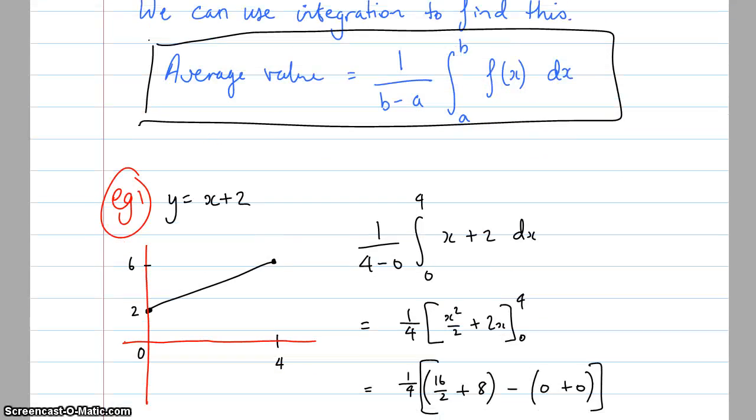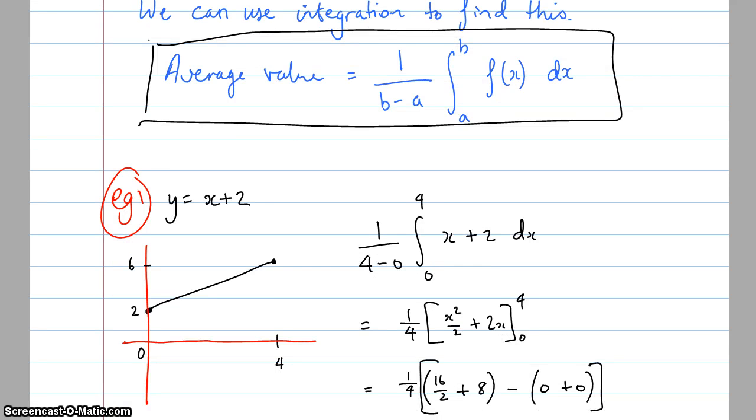So here's an example. I've got y = x + 2 as my function, and I want to know what the average value is between 2 and 4. Now I could kind of do this just by looking at it. I could find out what the average y value is in between here, because I can tell you that this y value here is 2, this y value is 6.